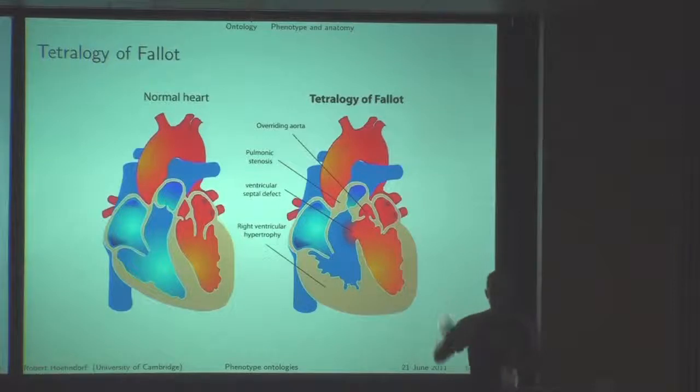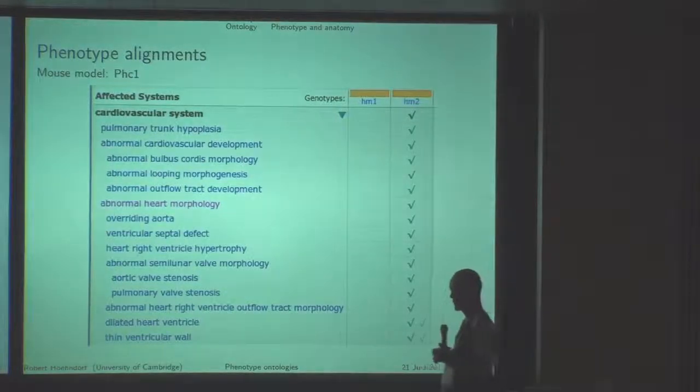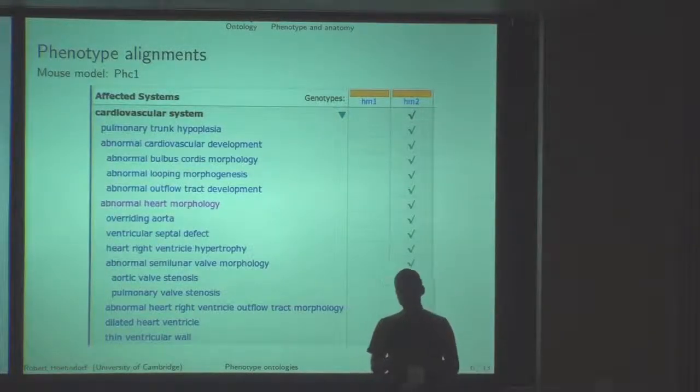We can find this in a database such as OMIM. These phenotypes are characterized in human terms. Now, when we look at one of the mouse models which comes out of this IKMC effort, this International Knockout Mouse Consortium effort,